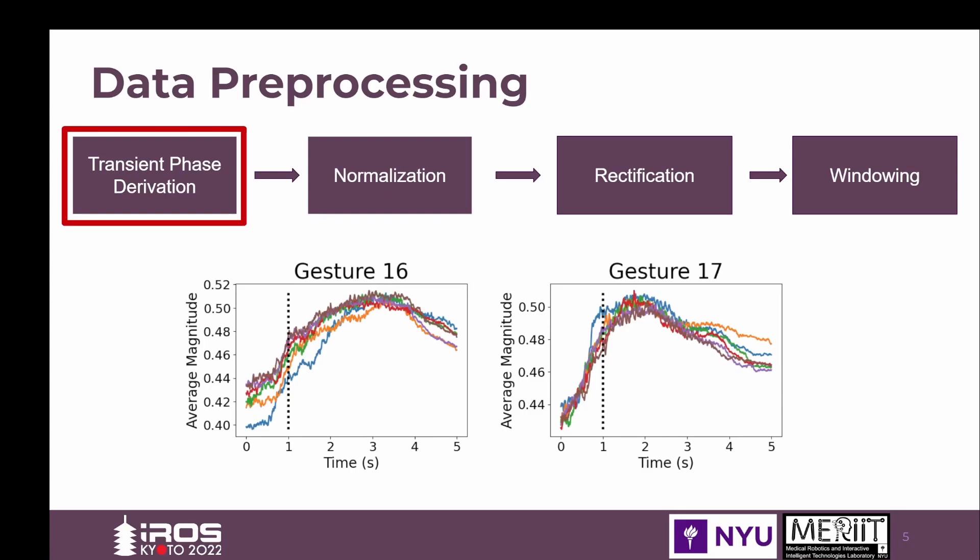Researchers conventionally leveraged the entire repetition, or only the plateau phase, where muscle contractions are stable and clean, allowing for better control but inherently introducing delay. Motivated by this issue, we predict hand gestures using only the transient phase signals, significantly reducing the training time and control delay. We define the transient phase based on the average RMS of the accelerometer data. As a result, the transient phase is the first 20%, approximately one second on average, of the gesture repetition.